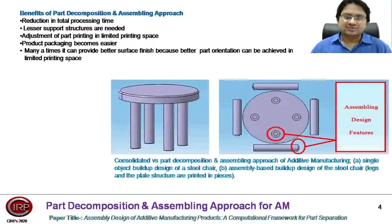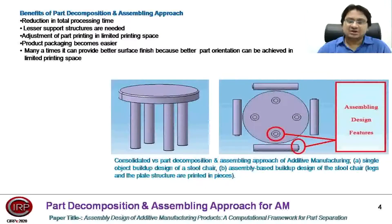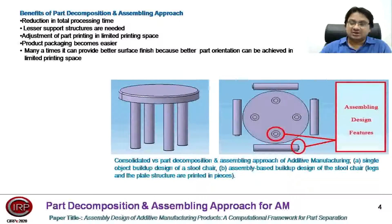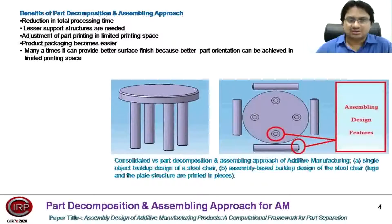Look at the figure here. On the left side, the consolidated part geometry of a tool chair is shown, and the decomposed part with its printing arrangement is shown on the right side. We can clearly observe that the printing height is reduced significantly when the decomposed part approach is followed. Surely, some interlocking arrangement design features would be required at the connecting surfaces, but as additive manufacturing is concerned, building of these features is not a big deal.